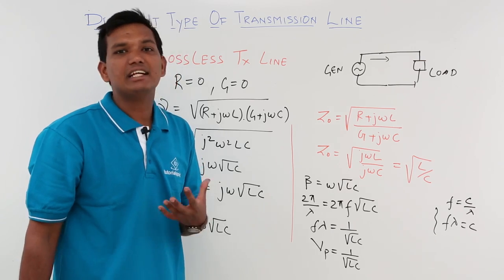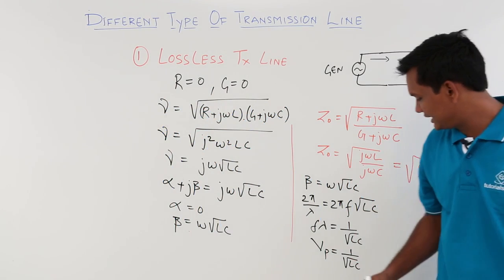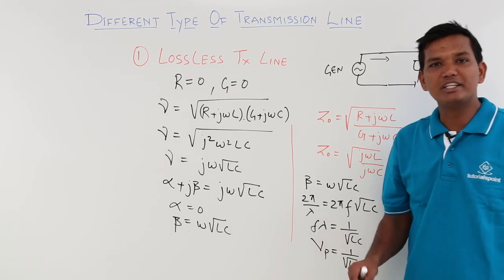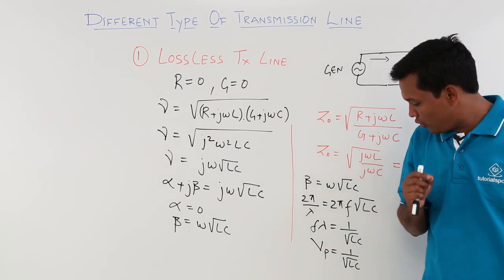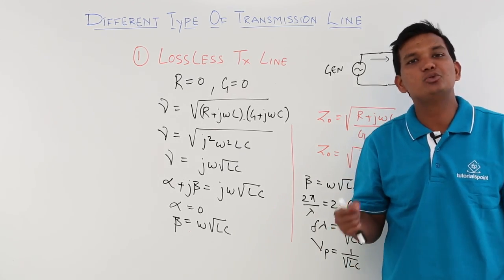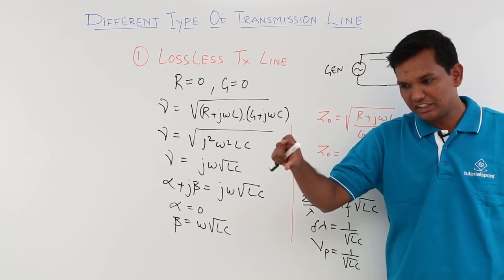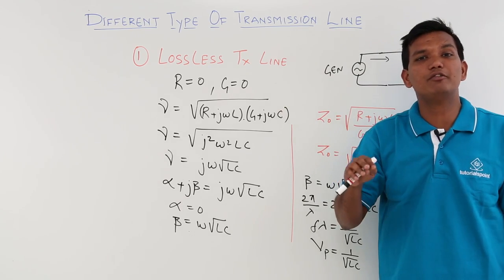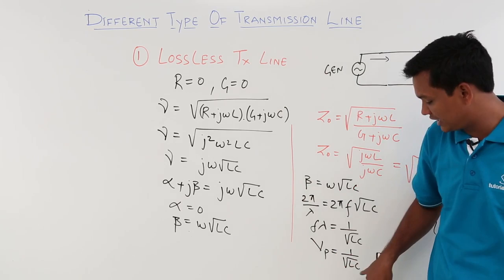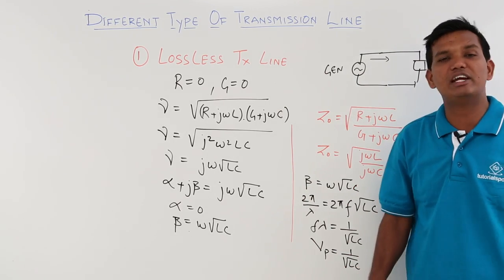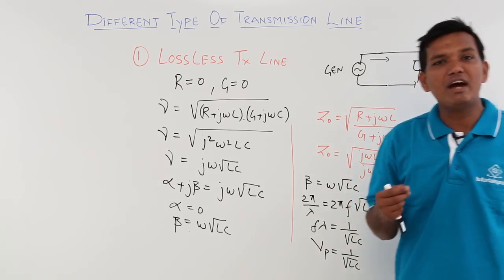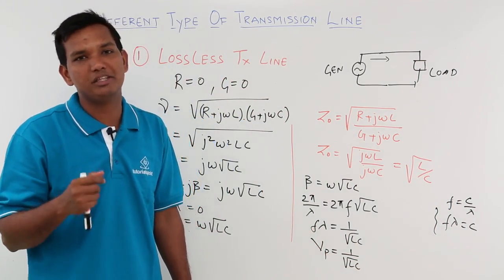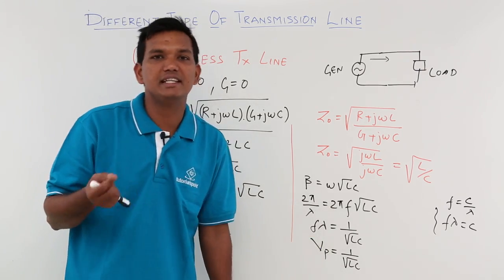An interesting point here: it might seem like we can change L and C, the primary constants of the transmission line, to control phase velocity. But the exact condition is the opposite — you cannot freely change L and C. The transmission line geometry and boundary conditions themselves determine what L and C will be, and that in turn determines the phase velocity. We do not have control over deciding what L and C will be.